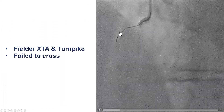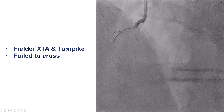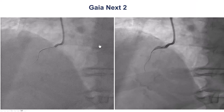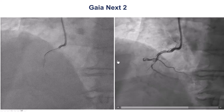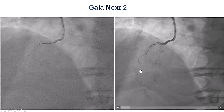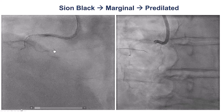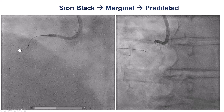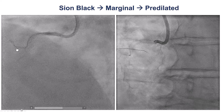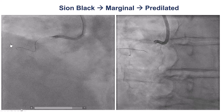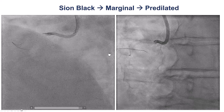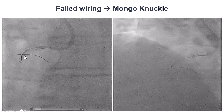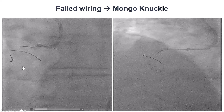We first tried using a microcatheter and a polymer-jacketed guide wire, but we were unable to cross. We used a Gaia-Next-2 that appeared to be going outside the vessel architecture. We then used a Confianza Pro Black that went into an acute marginal branch located next to the proximal cap of the lesion. We pre-dilated into the branch in an open-sesame fashion, but we were still unable to advance a wire through the mid-right coronary artery.